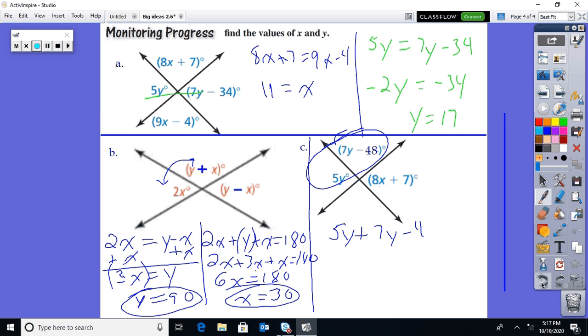You want to always look for the path of least resistance. 12y equals 228, so divide both sides by 12. Y is going to equal, let's see, 12 into 228 is 19. So y is 19.